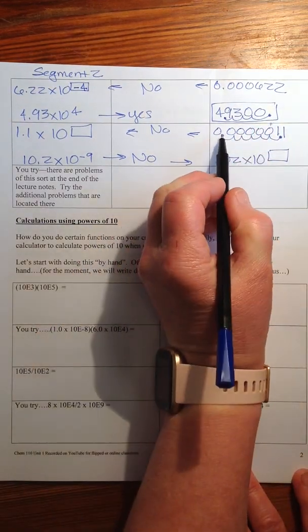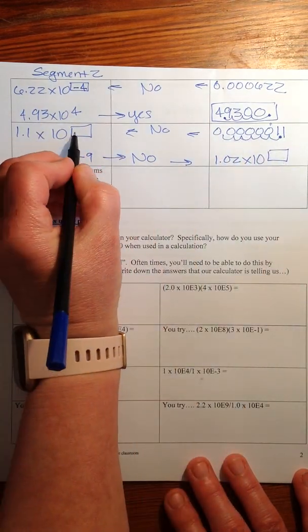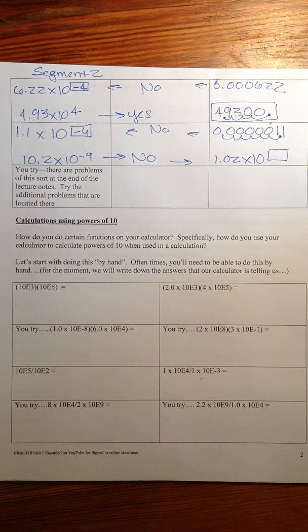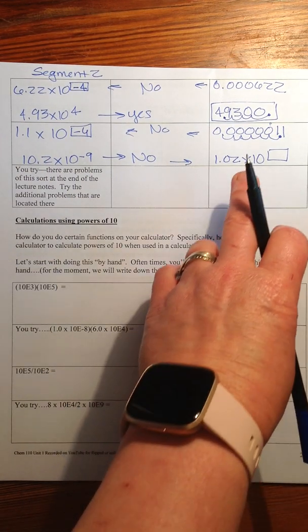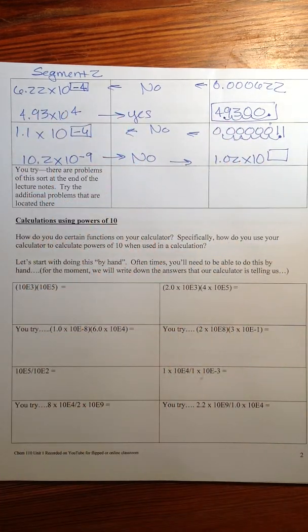So that means one, two, three, four, five, six places to the right means that that becomes a negative six. And that should make sense because this is a very small number. Negative powers of 10 are small.